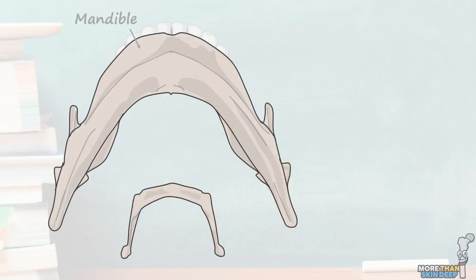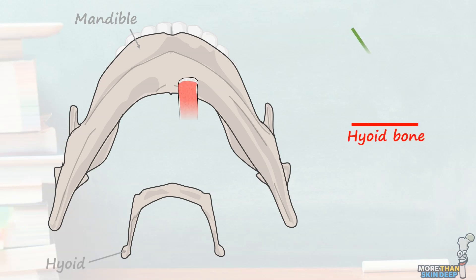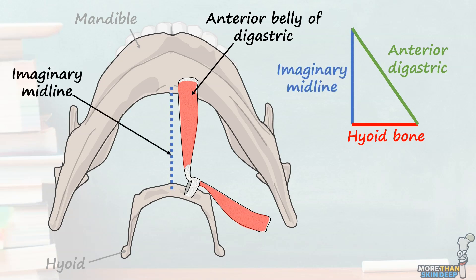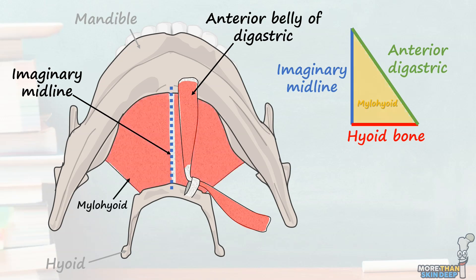The submental triangle is best viewed from an inferior perspective, as we see here. It's bounded inferiorly by the hyoid bone, laterally by the anterior belly of the digastric muscle, and medially by an imaginary line drawn down the midline of the neck. In the floor is the large mylohyoid muscle which spans both the left and right submental triangles.